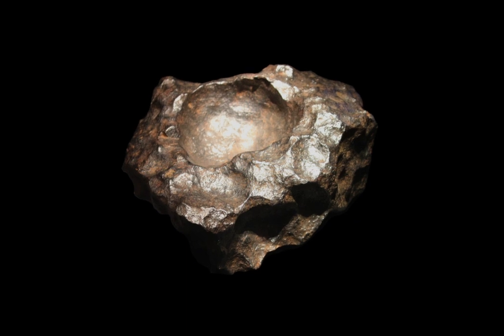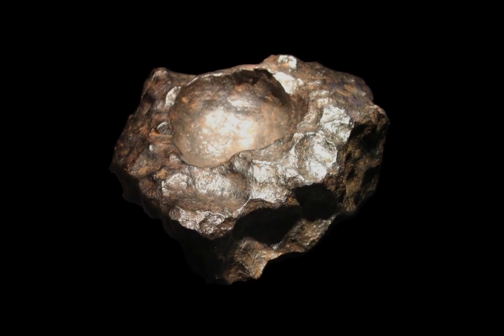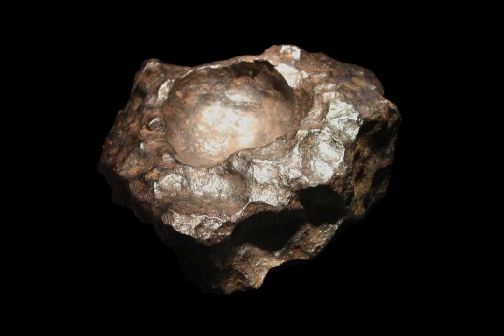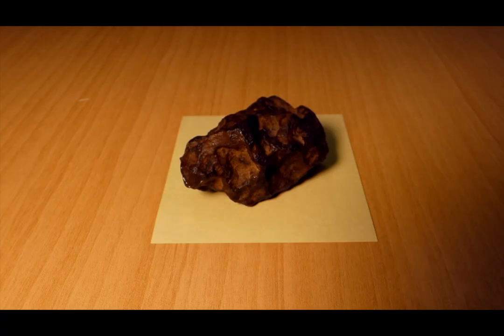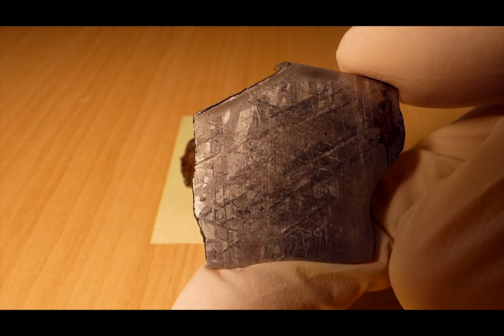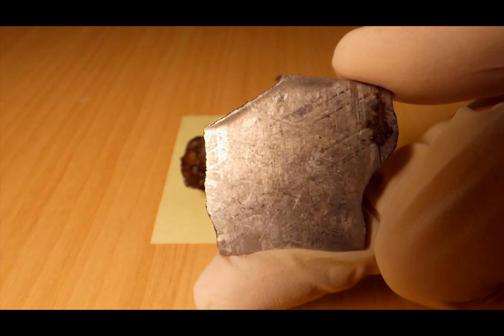A meteor that makes it all the way to the ground becomes a meteorite. It's a rare and precious object from across the solar system. What happens to it next is a story for another video. Thank you for watching. See you next time.